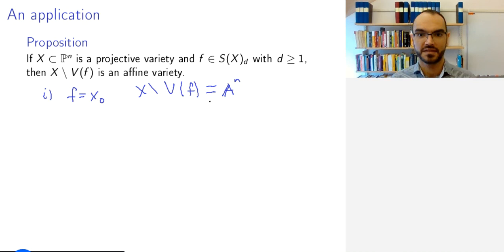The second case is if f is a linear polynomial, homogeneous linear polynomial. Then after a projective automorphism that we have seen, so changing coordinates linearly, you can bring yourself to the case where f is equal to x_0 and use step 1.